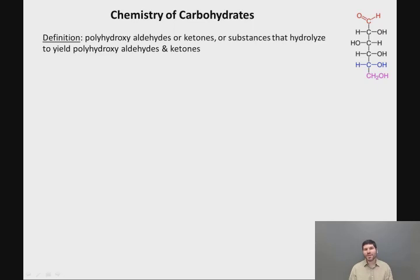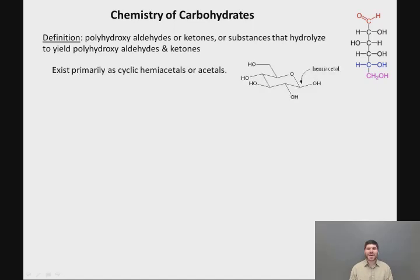What's drawn on the right is one way that carbohydrates are sometimes drawn in what's called the open-chain form. But naturally, these molecules actually exist primarily as cyclic hemiacetals or acetals. Glucose comes together to form a six-membered ring, and the carbon indicated with the arrow is a hemiacetal carbon — a carbon that is bound to both an OH and an ether oxygen.